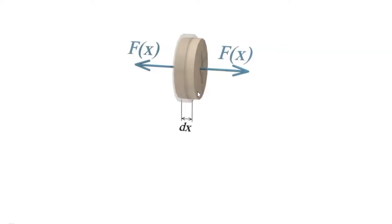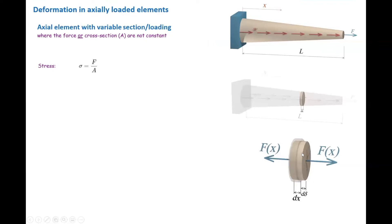To determine the deformation, we can use the FL/EA equation we previously developed, because in that small particle, area is constant, force is constant, and if the material is homogeneous, the modulus of elasticity remains constant. So in this particle, we can calculate the deformation — I'm going to call that d-delta. d stands for very small part, and delta stands for the deformation. In that tiny particle, stress is defined as force divided by area.